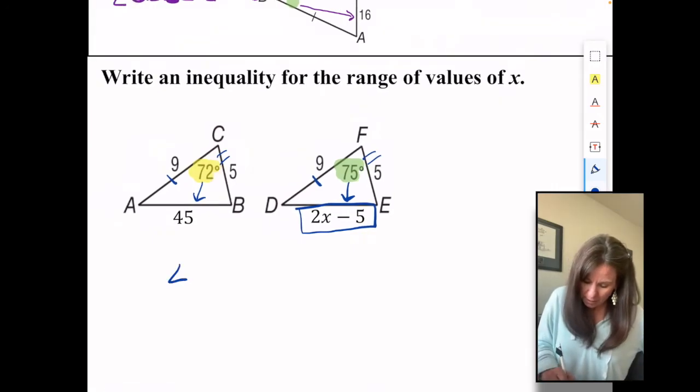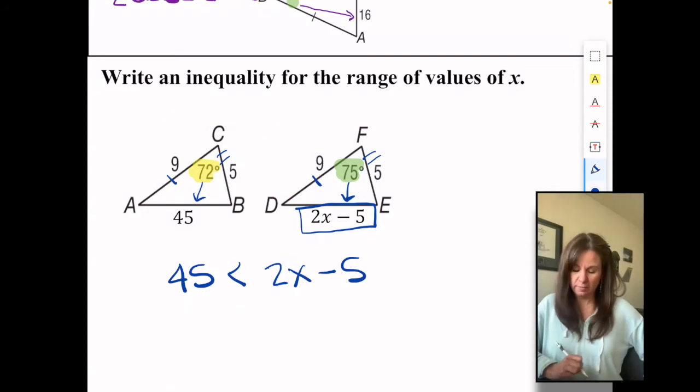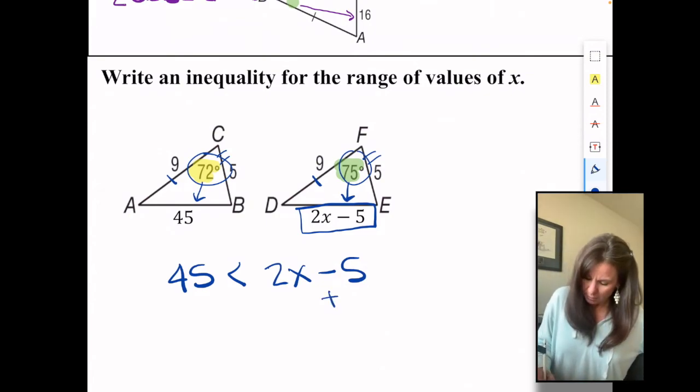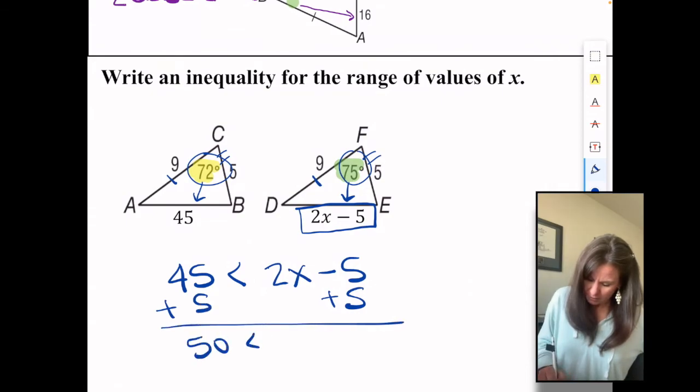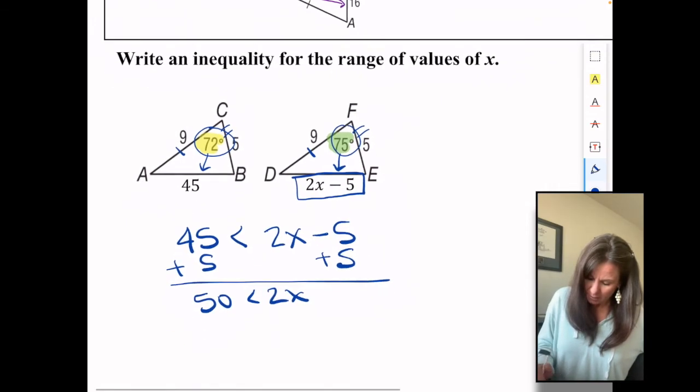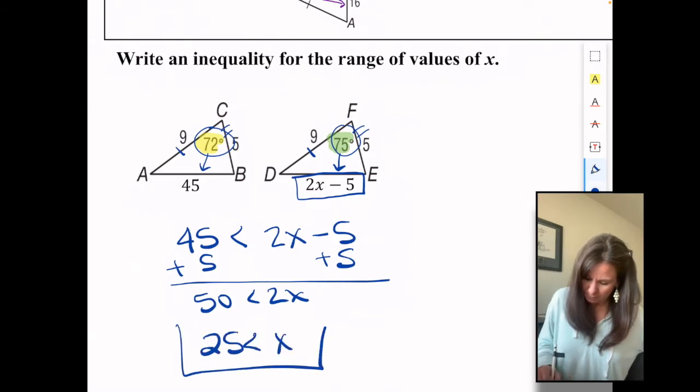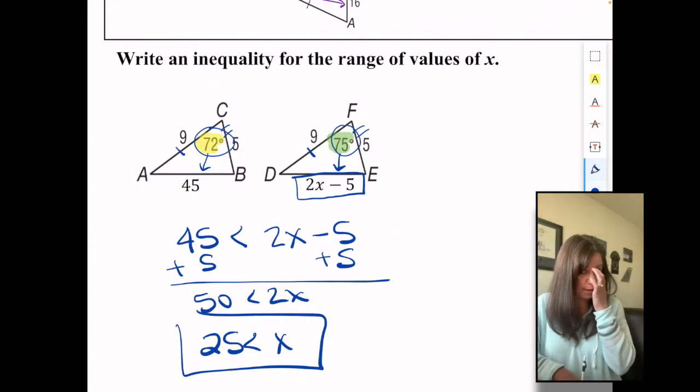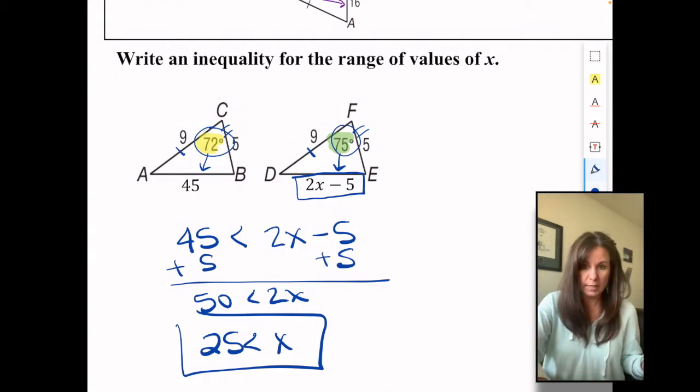So 45 has to be less than 2X minus 5 because 72 is less than 75. Now we solve for X. Add 5 to both sides. So X is less than 25. So that's what X can be. Anything less than 25 would make that a true set of triangles.